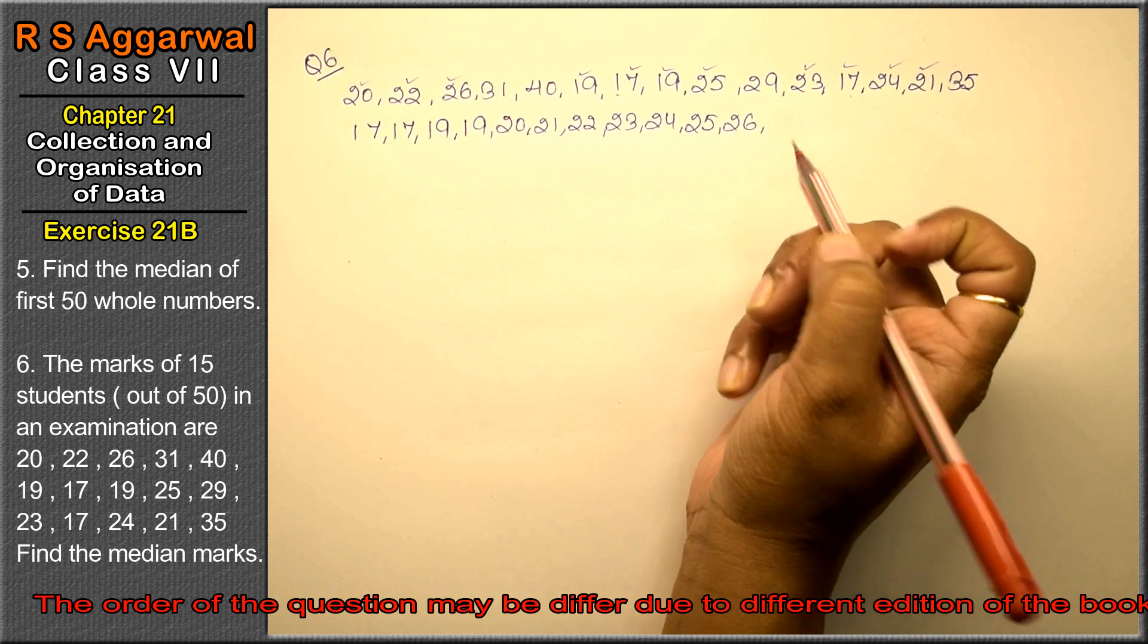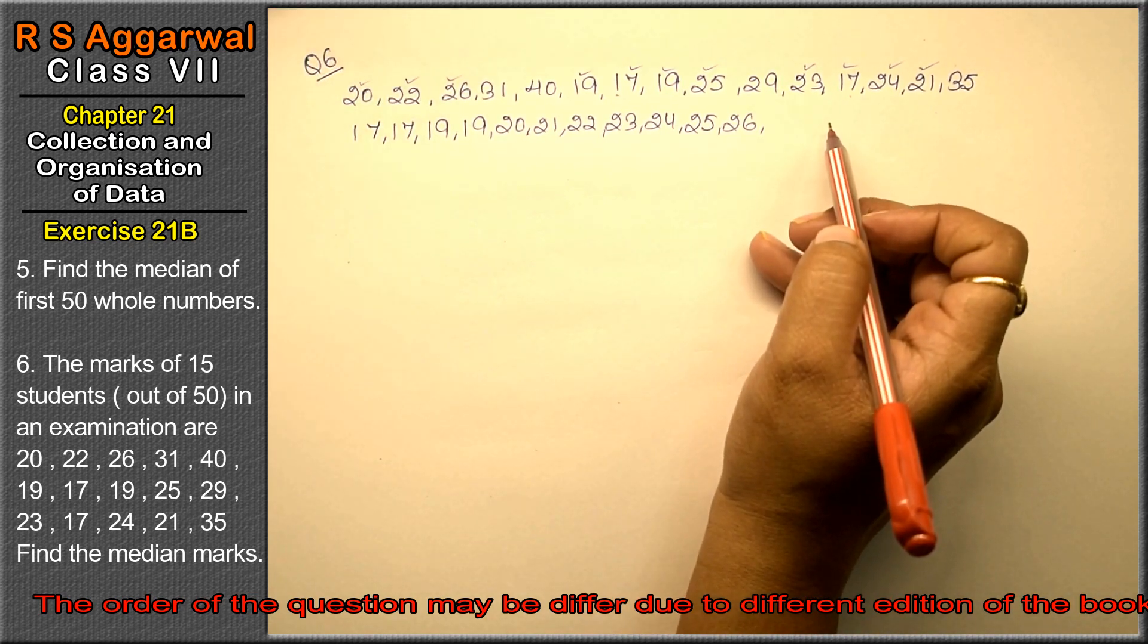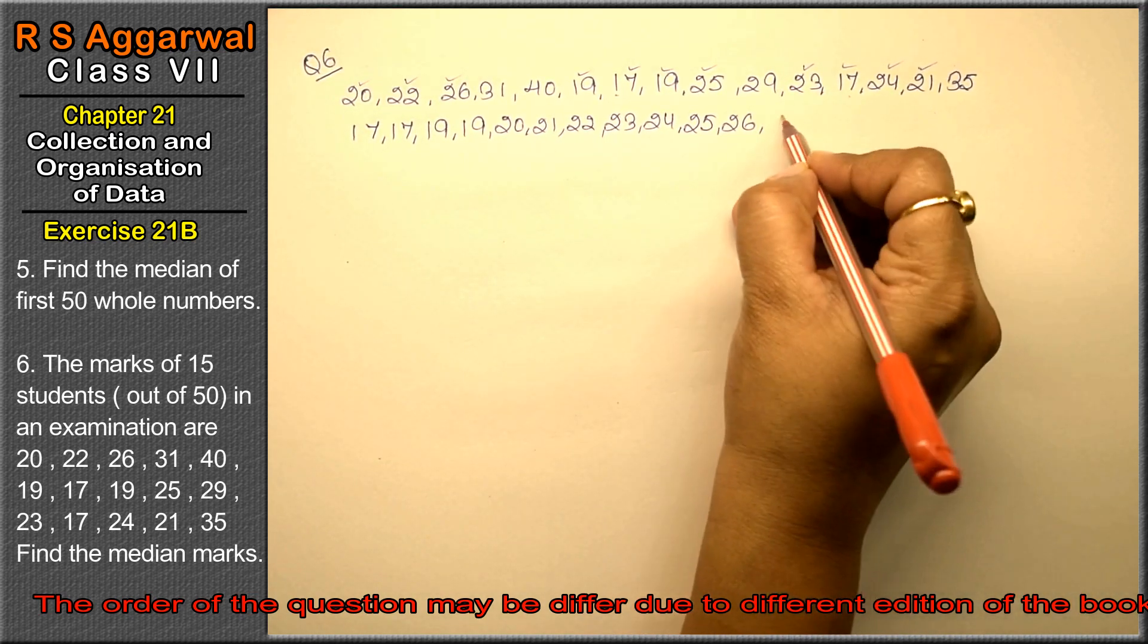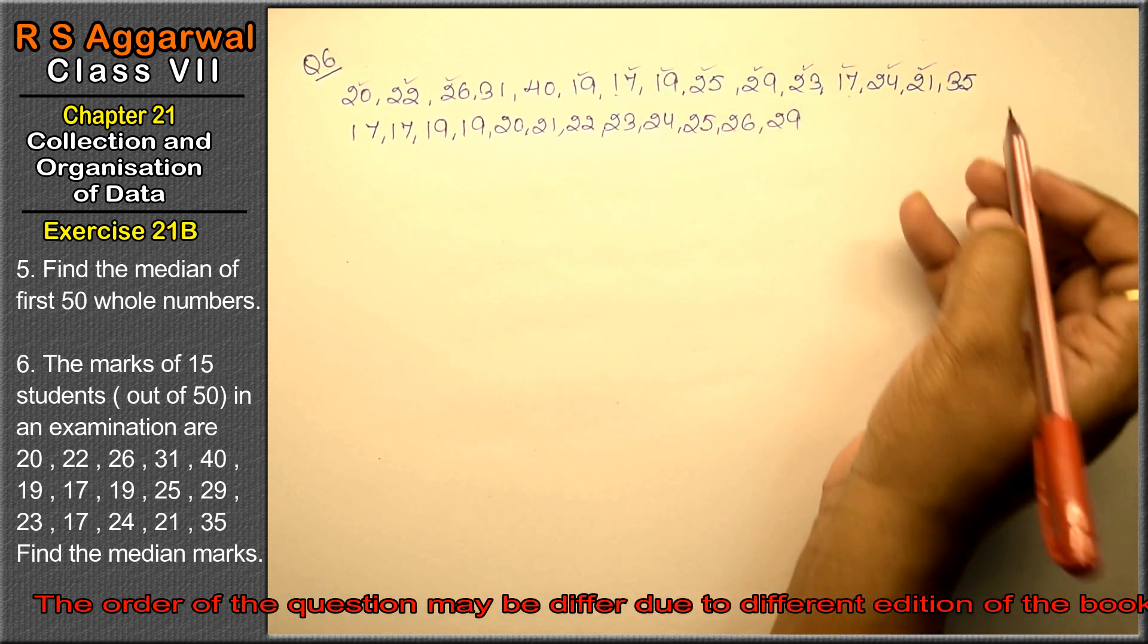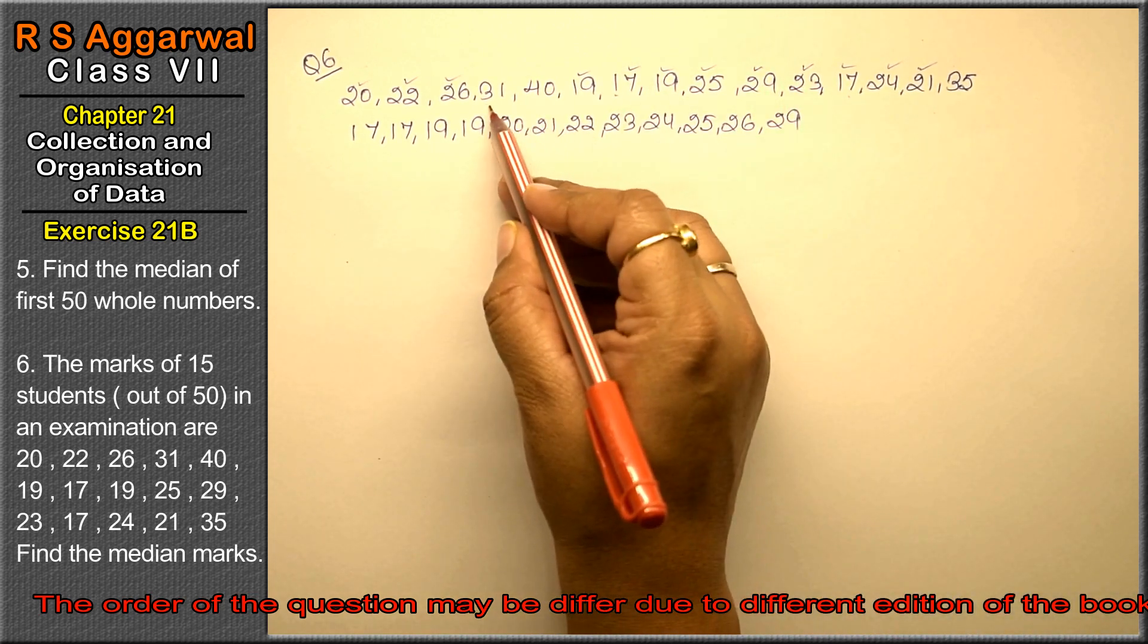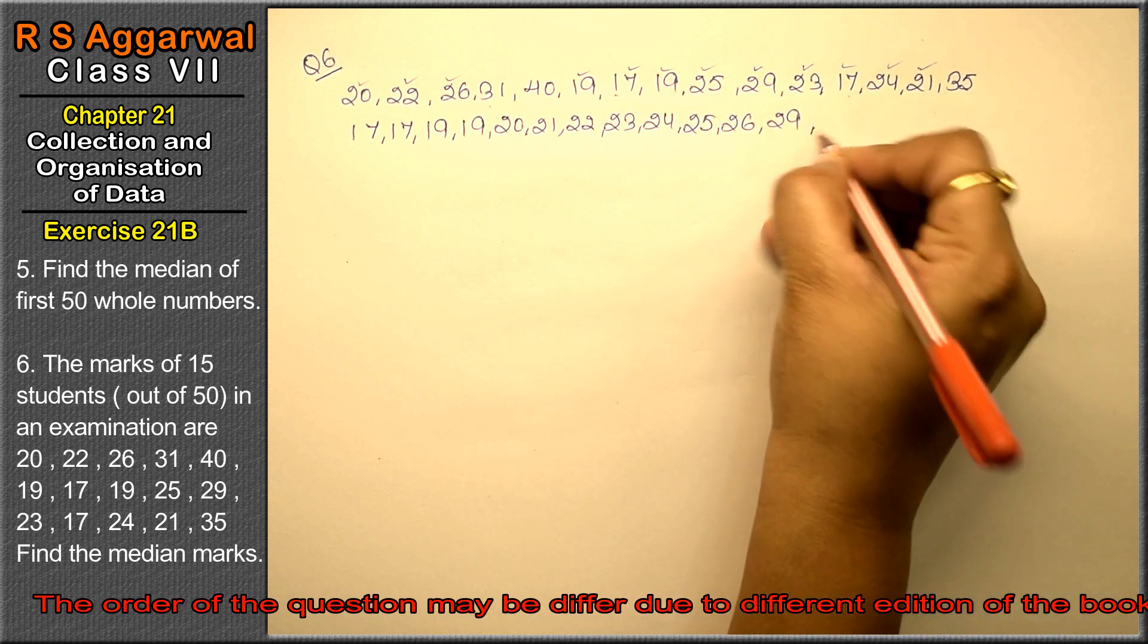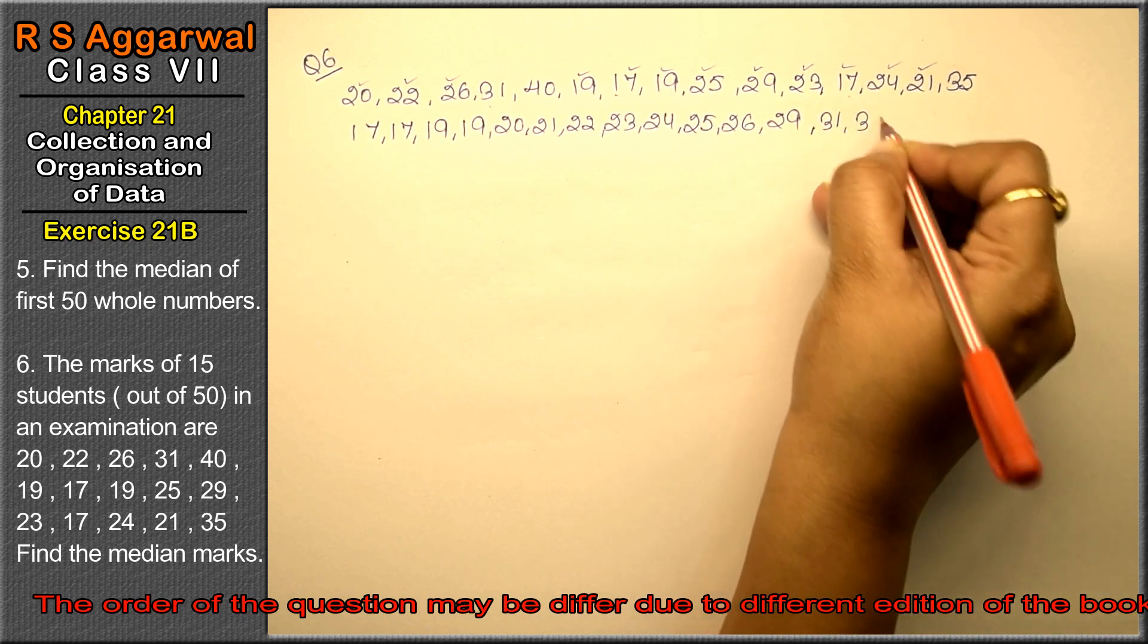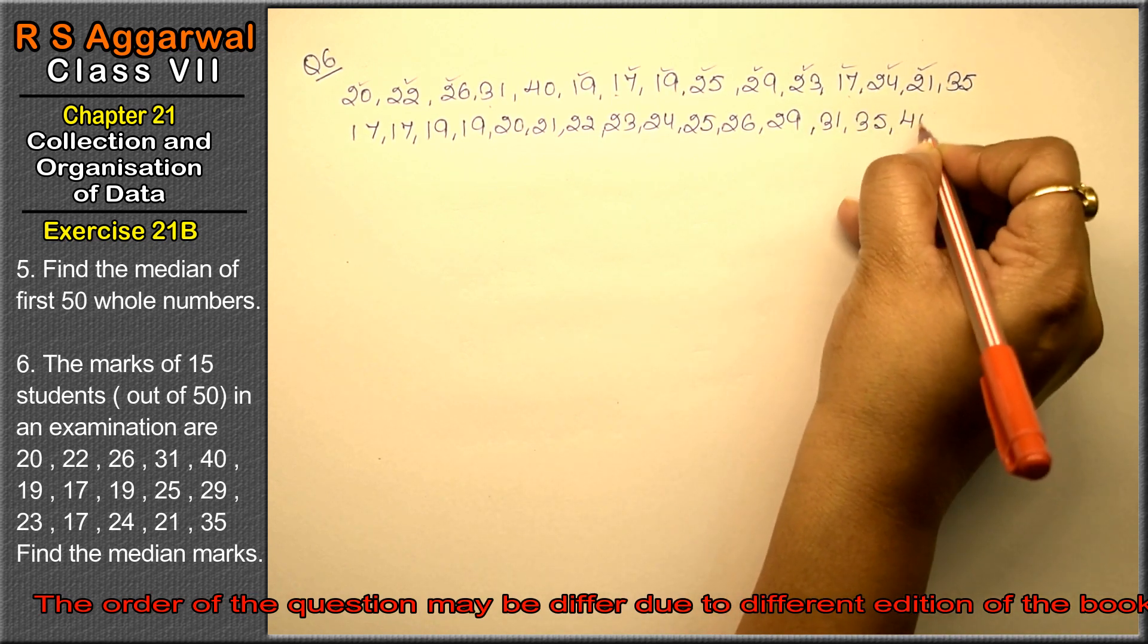Then it is 29, then 31, 35, and 40. So 31, 35, and 40.